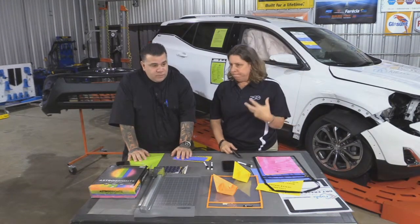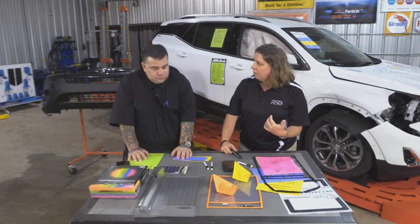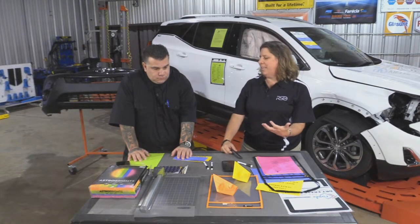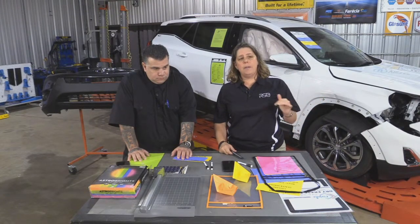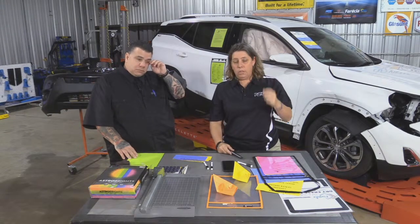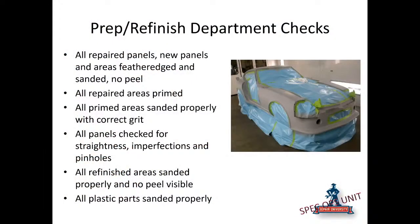Now the paint department does another check on themselves: did you verify that all repaired panels, new panels, and areas are feathered, sanded, and ready to go? No peel issues, no overlap, no shrinkage concerns. Are all repair areas primed? Is everything ready to go? Are all primed areas sanded properly? Are all panels checked for straightness, imperfections, pinholes? Are all refinished areas sanded properly so there is no peel visible? Are all plastic parts sanded and prepped properly?